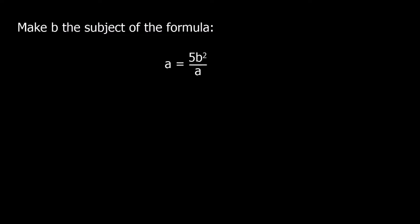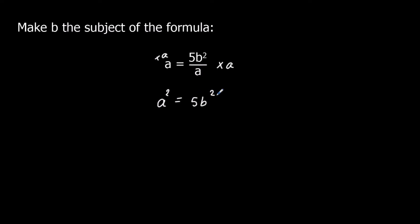Again, make b the subject of the formula. This time I've got a equals 5b squared over a. I'm going to get rid of this divide by a first. To get rid of a divide by a, the opposite of divide is times, so I'm going to multiply both sides by a. On the left I've got a times a, and a times a we can write as a squared. On the right I've now got 5b squared.